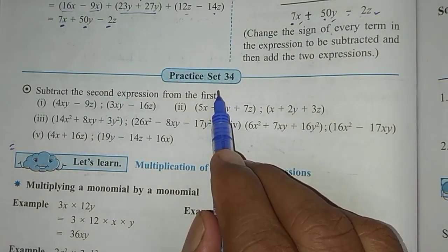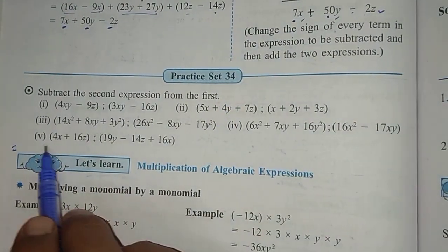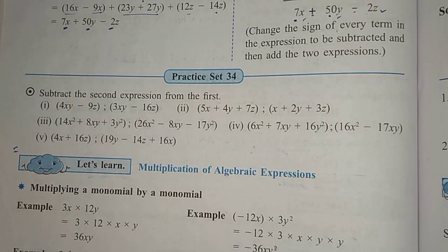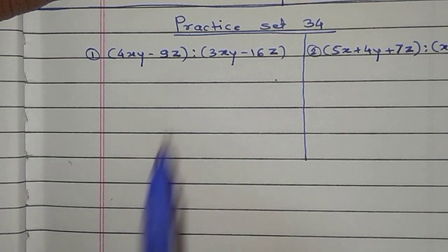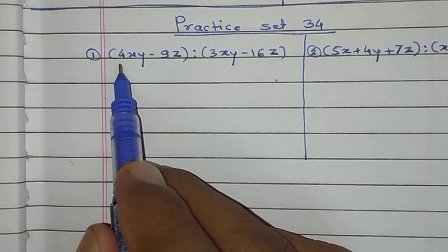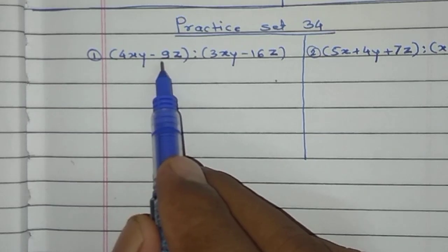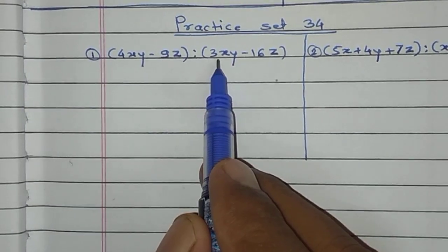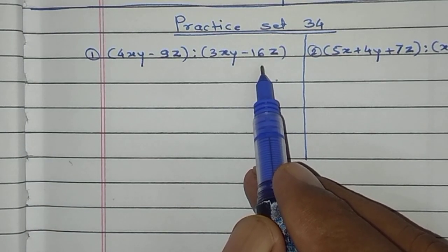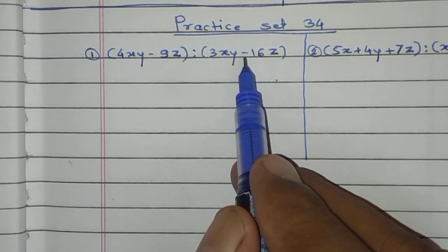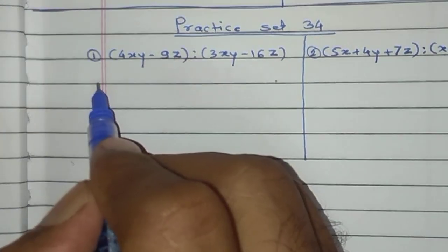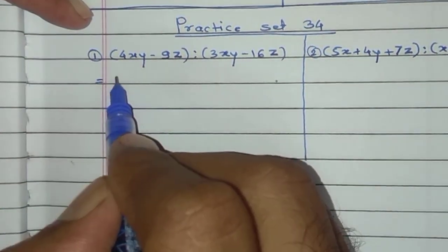Now let us move to practice set number 34. There are 5 examples that will be explained in the notebook. The first example is given in the first bracket: 4xy minus 9z. The second bracket is 3xy minus 16z. The instruction is: subtract the second expression from the first one. So we write it.